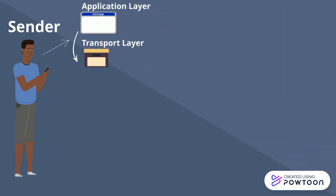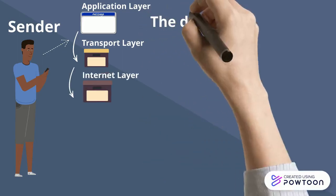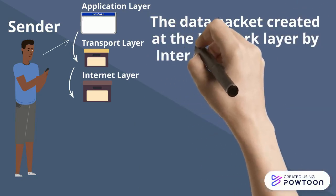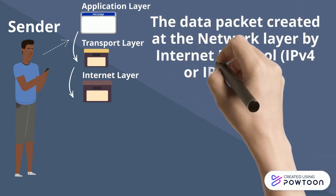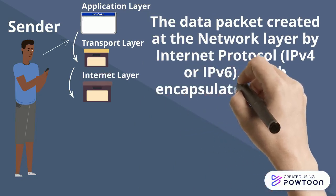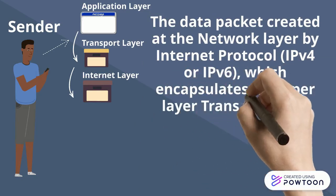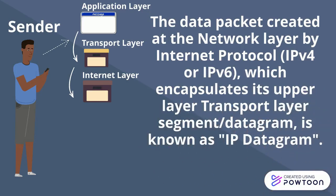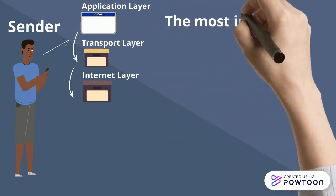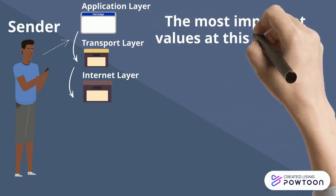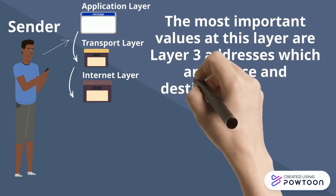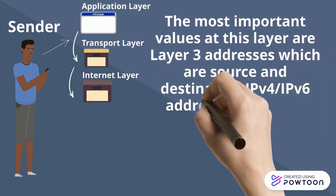The third layer is the network layer. The packets created at the network layer by Internet Protocol — IPv4 or IPv6 — encapsulate the upper transport layer segment or datagram. This is known as an IP datagram. The most important values of this layer are the Layer 3 addresses, which are the source and destination IPv4 or IPv6 addresses.